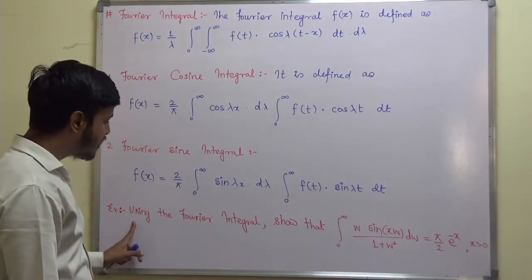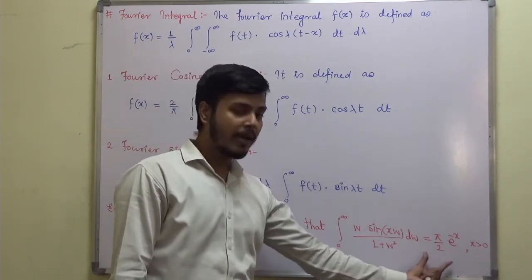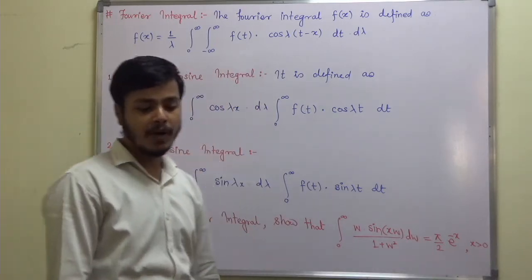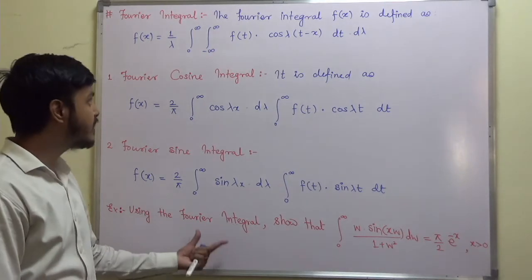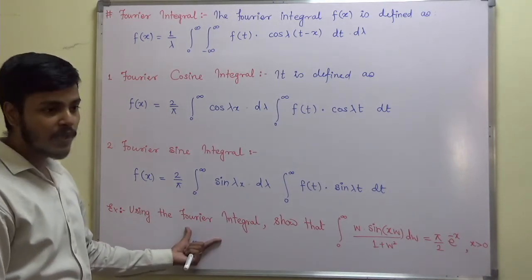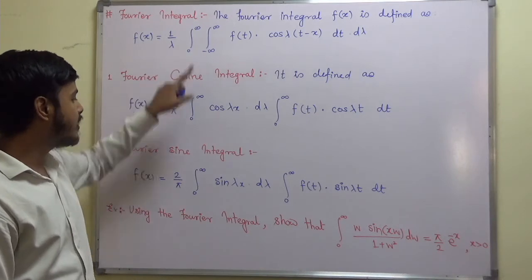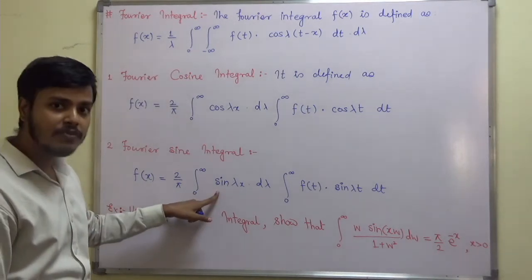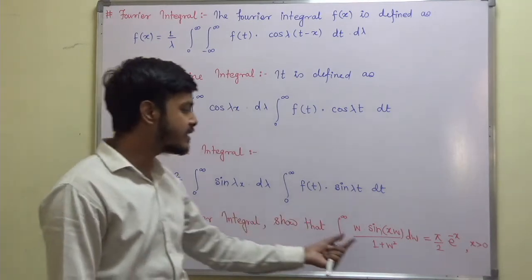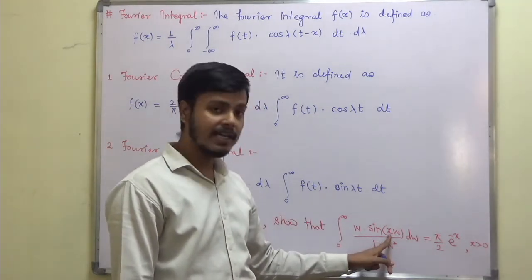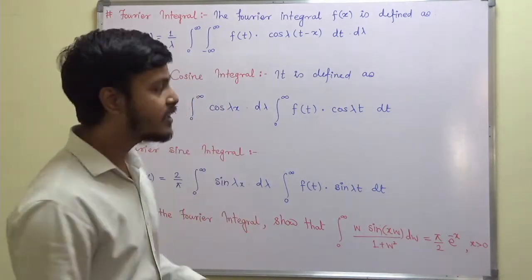Now let us take this problem. The problem says: find using the Fourier integral and show that the result equals (π/2) e^(−x). As you can see, since the result involves sine, I am going to make use of the Fourier sine integral definition.